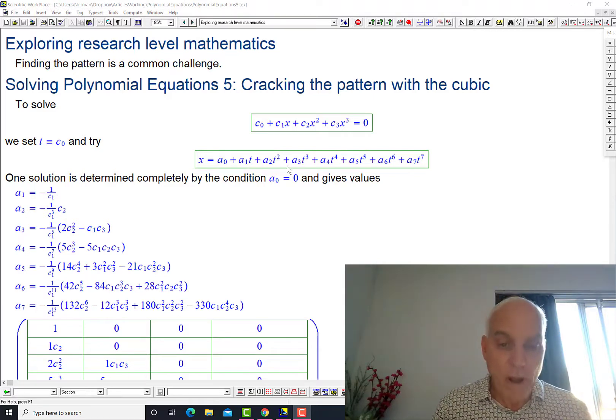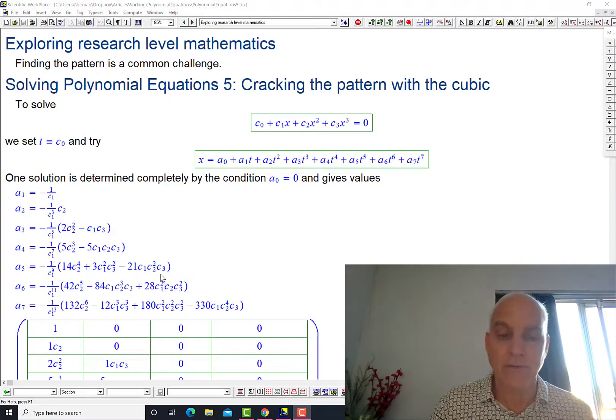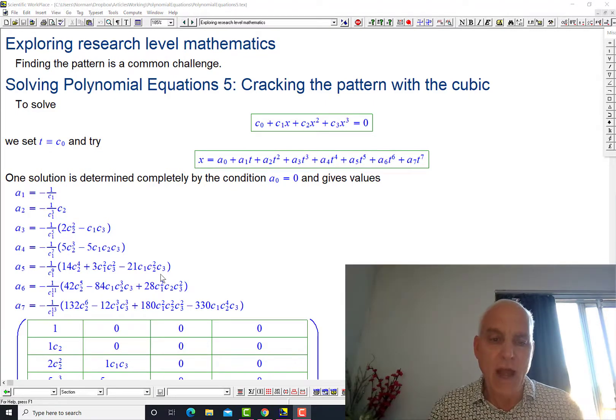We found that one possibility was that a0 equals zero and then that generated these subsequent values for the a's in terms of the original c's. So we got a1, a2 up to a7 and the expressions involved certain terms involving the c's.